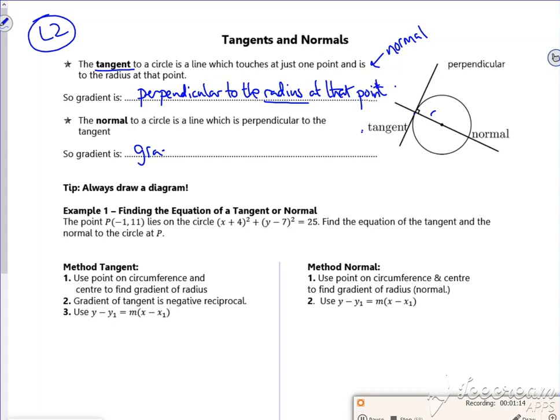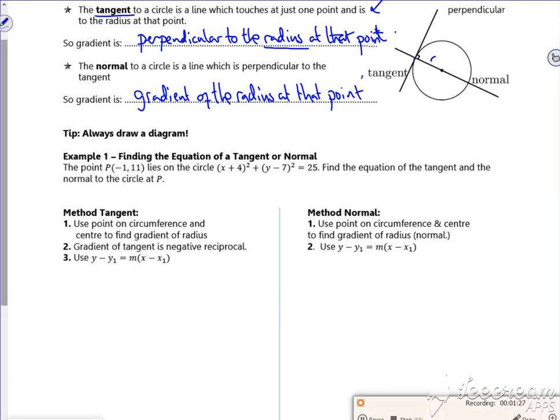Right, so it says tip: always draw a diagram, that's quite true. So when I find the equation of the normal tangent, we've got point P which is (-1, 11) lies on the circle. So we know from this information here that the center of this circle is (-4, 7) and it has a radius of 5.